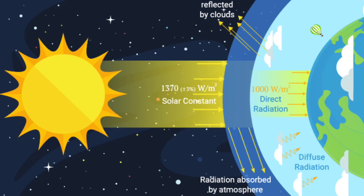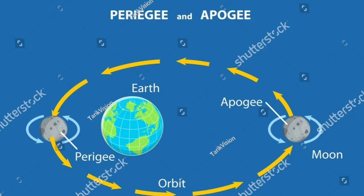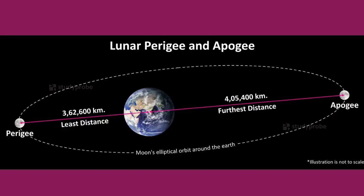The solar radiation received at the top of the atmosphere is not always the same, due to the elliptical shape of the earth's orbit around the sun. During its revolution around the sun, the earth is farthest from the sun on 4th July, as its distance is 152 million kilometers from the sun, whereas the average distance of the earth from the sun is 149 million kilometers. This position of the earth in its orbit is called aphelion, as the earth is at its apogee or at the farthest point in its orbit around the sun.